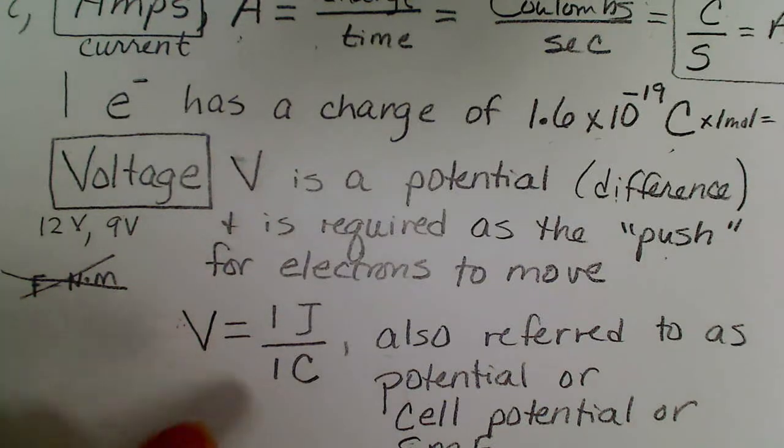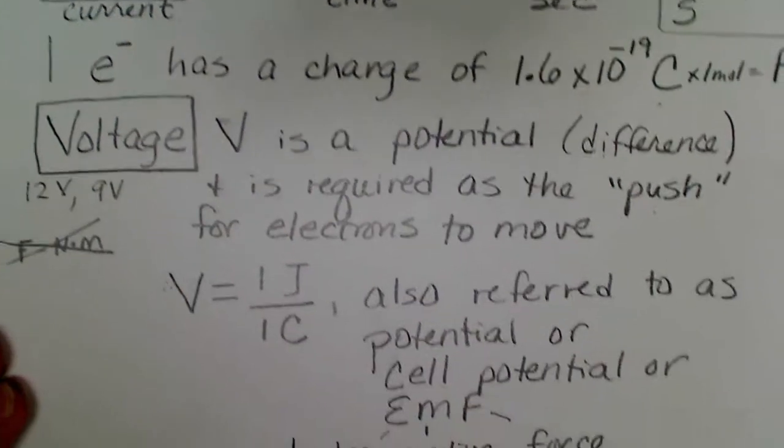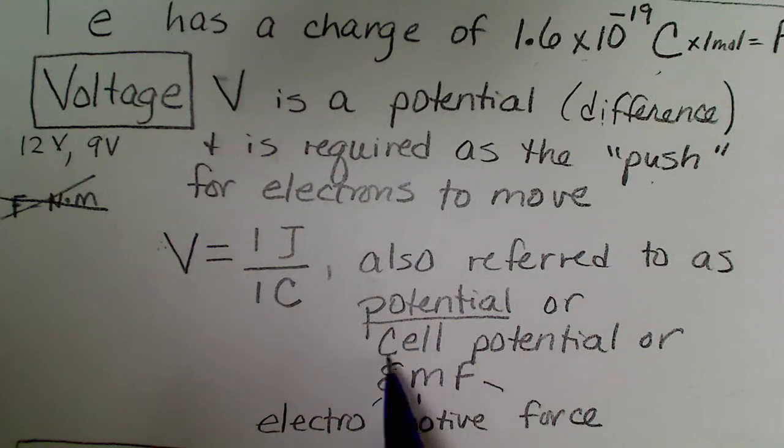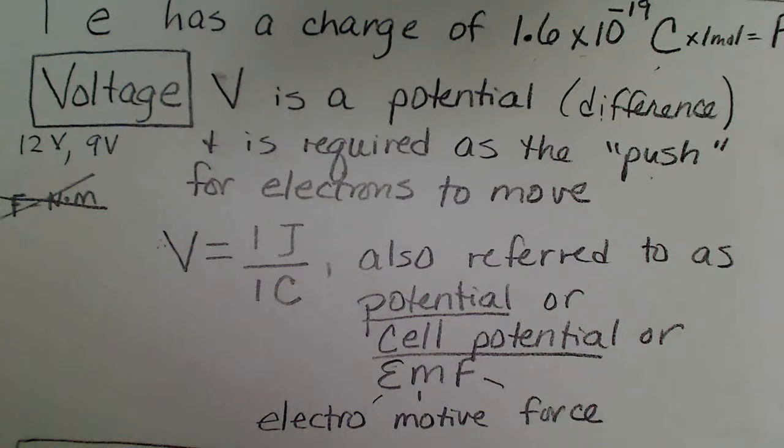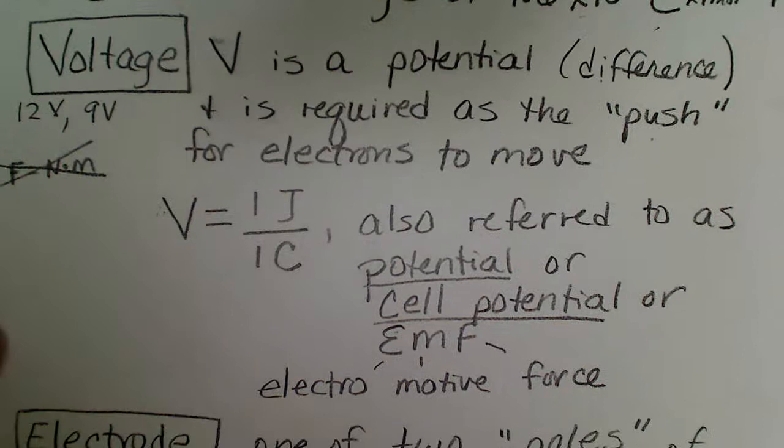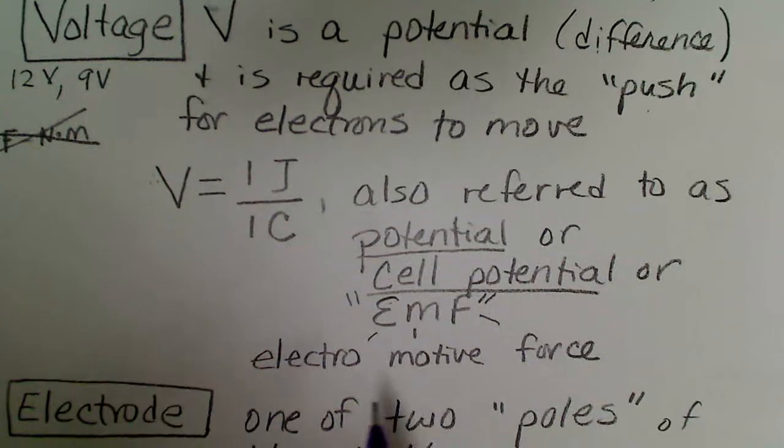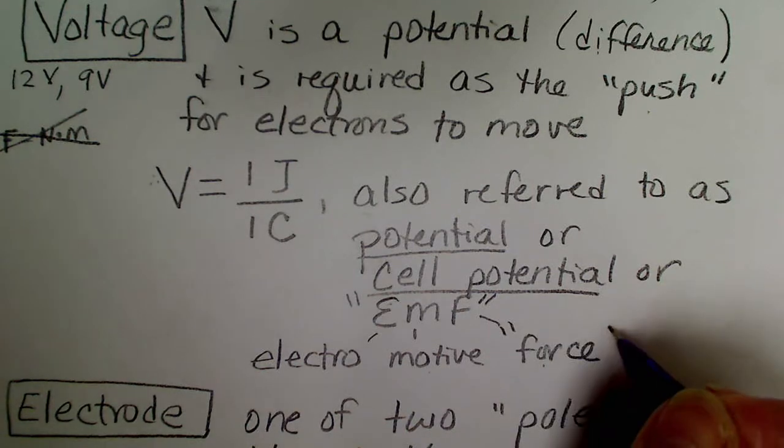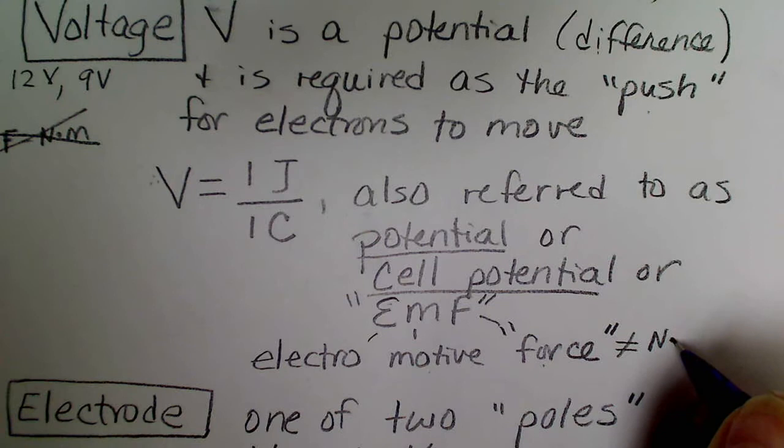A volt is defined as the energy of voltage that will be imparted to one Coulomb. Our chemistry book is going to refer to voltage as the potential or cell potential. It might also say potential difference, or EMF is often written, and EMF means an electromotive force.